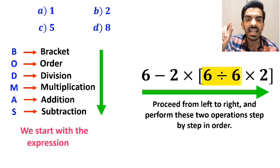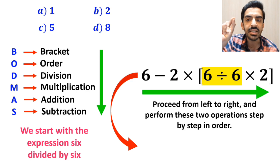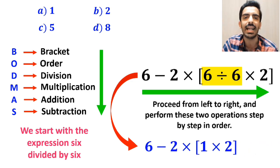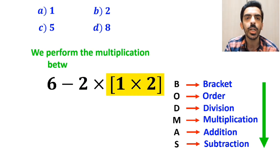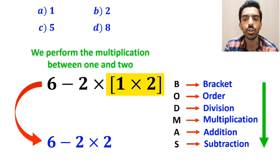Okay, we start with the expression 6 divided by 6 and write this expression as 6 minus 2 multiplied by 1 times 2 inside the brackets. In the next step, we perform the multiplication between 1 and 2, and this expression simplifies to 6 minus 2 times 2.